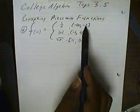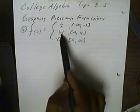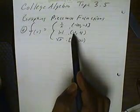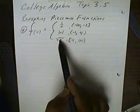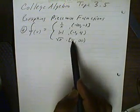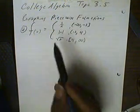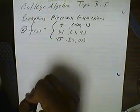It tells us basically when these equations start and when they stop. This equation will stop at x is negative 1. This equation will start at x is negative 1 and stop at x is 4. And this equation will start at x is 4. So, let's start graphing these.